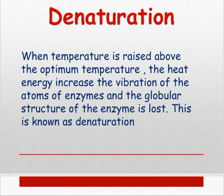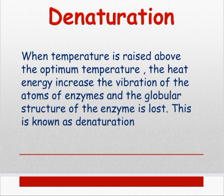Denaturation: when temperature is raised above the optimum temperature, the heat energy increases the vibration of the atoms of enzymes and the globular structure of the enzyme is lost. This is known as denaturation. When temperature increases beyond the optimum, the movement of molecules increases, and due to that increasing movement, the globular (circular) structure of the enzyme is lost and broken down — that process is known as denaturation.